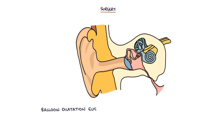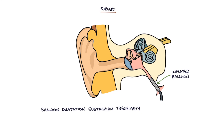The third surgical option is balloon dilatation eustachian tuboplasty. This involves inserting a deflated balloon into the eustachian tube, inflating the balloon for a short period — for example two minutes — in order to stretch the eustachian tube, then deflating and removing it. Essentially, a balloon is used to stretch the eustachian tube. This is usually done under a general anaesthetic.